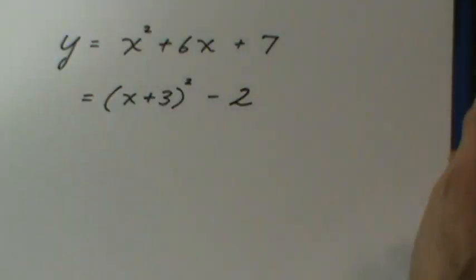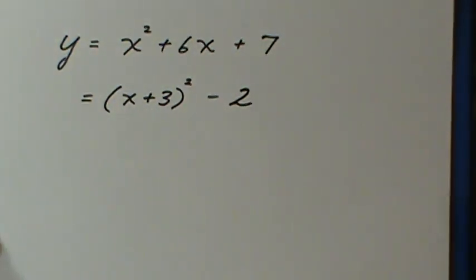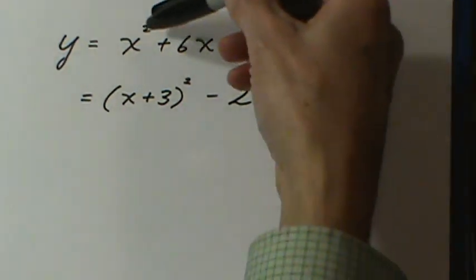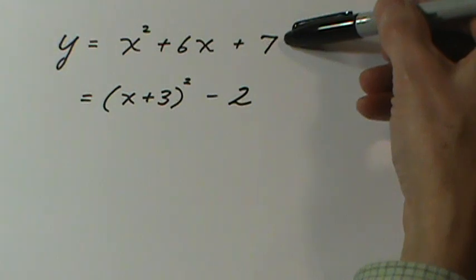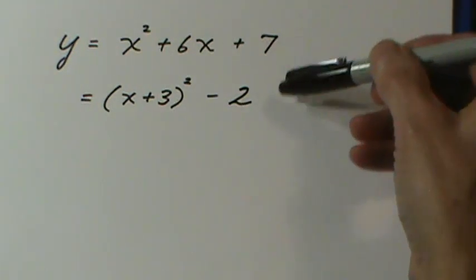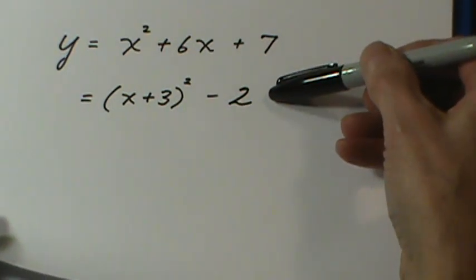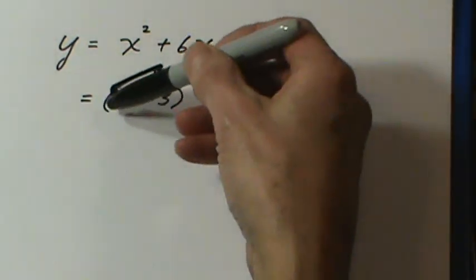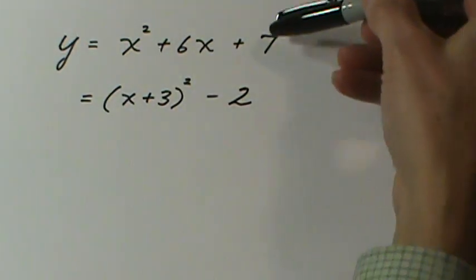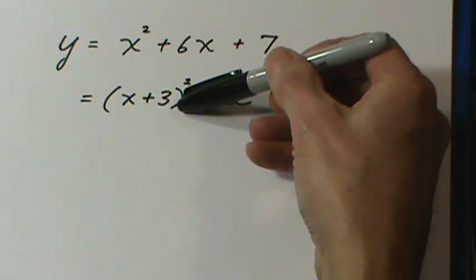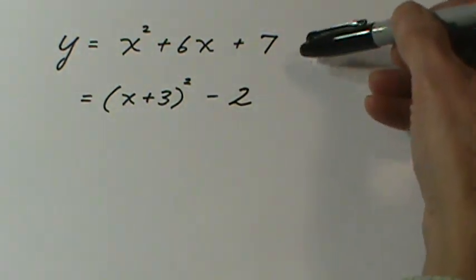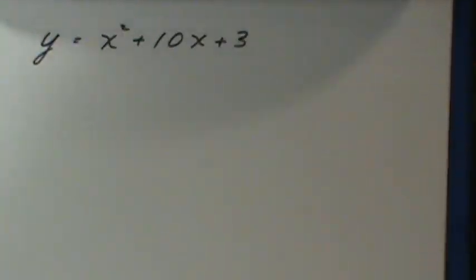Completing the square is the expression used to describe the process of changing an expression like this, called standard form, into the completed square form. It's easy to get from the completed square form back to here. All you have to do is expand the binomial, subtract the two, and you're back to this. But completing the square takes a little bit more work.